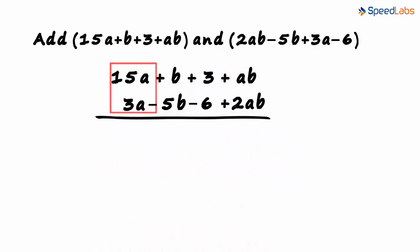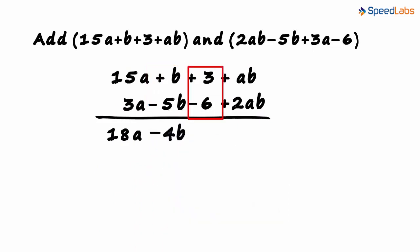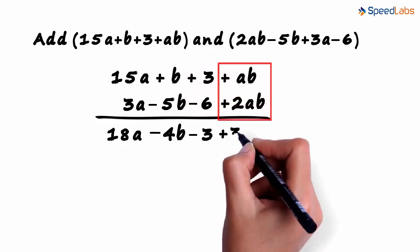15a plus 3a is 18a. b minus 5b is minus 4b. 3 minus 6 is minus 3. And ab plus 2ab is 3ab.